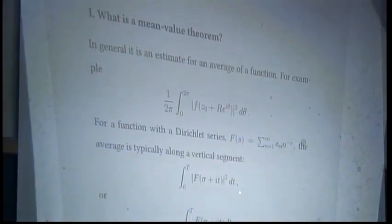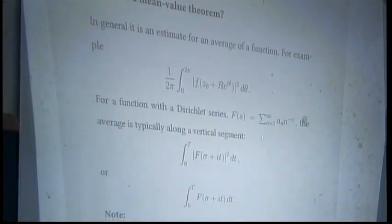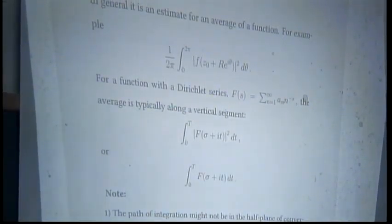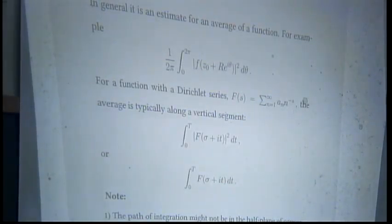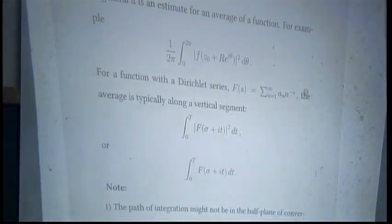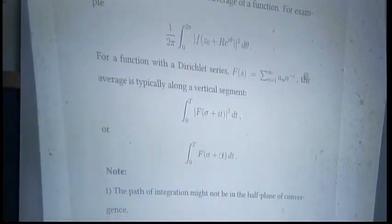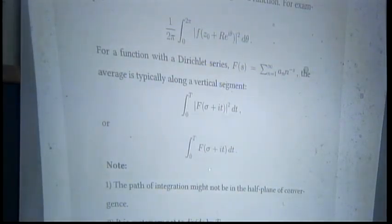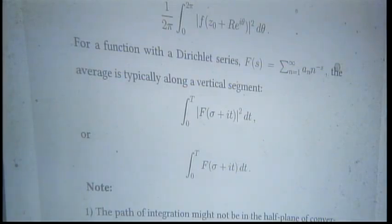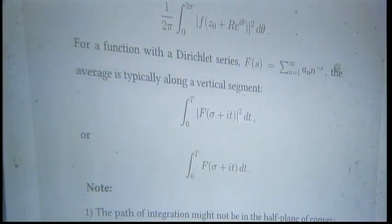If you have a function — it could be the zeta function, an L-function, or something much more complicated — then this is what we mean by the mean square of F. Sigma depends on sigma; you fix an ordinate and then integrate from zero to capital T, and you're interested in the behavior as T goes to infinity. One thing to keep in mind is that the function where you're integrating may not be in the domain of absolute convergence of the series.